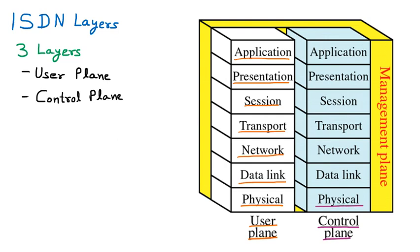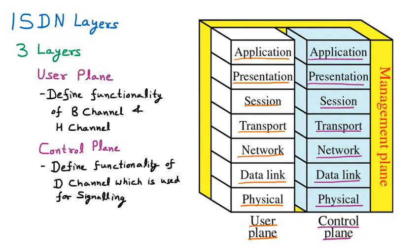The physical, data link, network, transport, session, presentation, and application layers from the OSI model are used for signaling in the control plane. To summarize: the user plane defines the functionality of the B channel and H channel — B is the bearer channel, H is the hybrid channel — and data is transmitted through them. The control plane defines the functionality of the D channel, which is the data channel working for signaling.